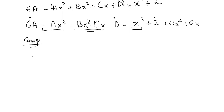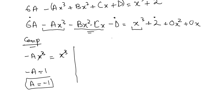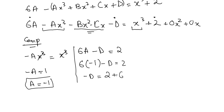Comparing the x³ terms: −A = 1, so A = −1. For the constant term: 6A − D = 2, substituting A = −1 gives −6 − D = 2, so −D = 8, meaning D = −8. We now have A = −1, B = 0, C = 0, and D = −8.